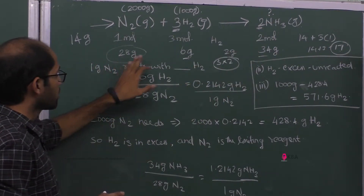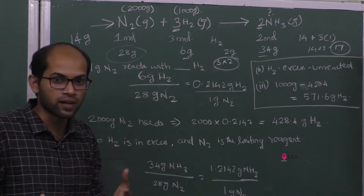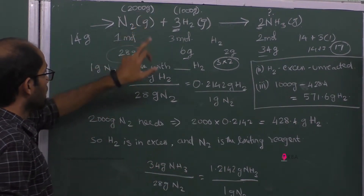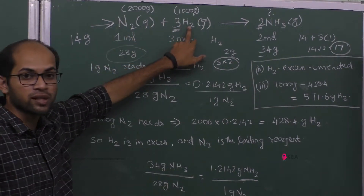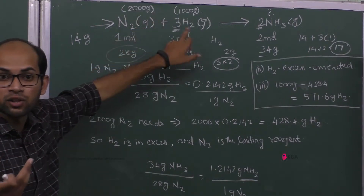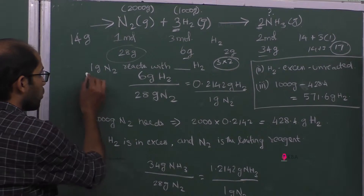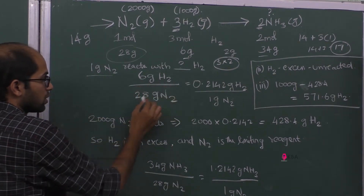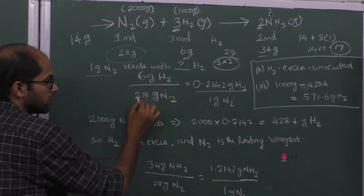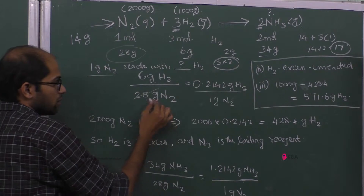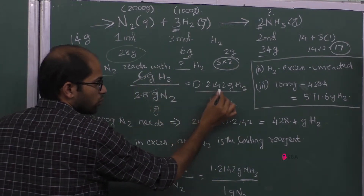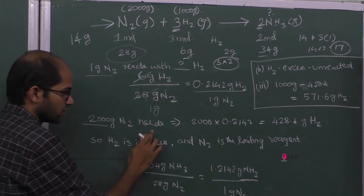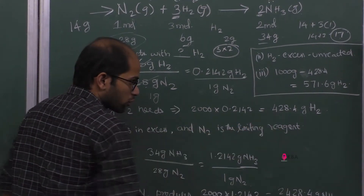28 grams of nitrogen reacts with 6 grams of hydrogen. So 1 gram of nitrogen reacts with 6 ÷ 28 = 0.2142 grams of hydrogen. Therefore, 2000 grams of nitrogen needs 2000 × 0.2142 = 428.4 grams of hydrogen.